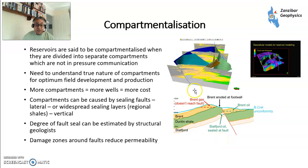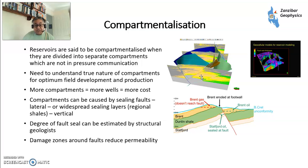Compartmentalization is splitting up the reservoir into different compartments, mainly due to faulting. Each fault panel would have slightly different pressures, slightly different temperatures, maybe even slightly different fluids. The more compartments you have, the more wells you need and the more cost you incur. Also, if you're doing a water flood — pressure support using water injection — an injector in one compartment may not provide pressure support to another compartment. Compartments can be defined by sealing faults, as shown in this cartoon from the Brent province in the North Sea, or by regional shales providing vertical separation. Each fault will also have a damage zone which can induce permeability locally around the fault plane, up to around 1,500 metres either side.